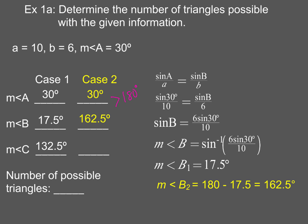And since that sum is more than 180 degrees, I don't have a second triangle. I've only got one possible triangle for this situation. So the number of triangles possible in this situation is just one.